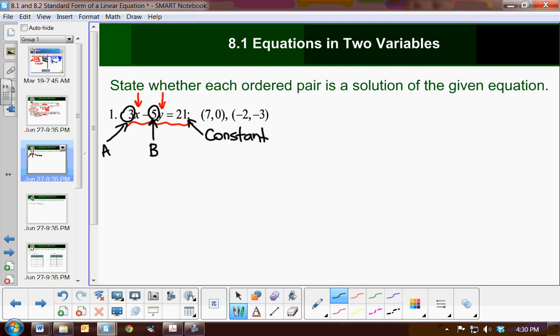Now the directions here say, state whether each ordered pair is a solution. So let's check out the first ordered pair, 7, 0. So the value of x will be 7, and the value of y will be 0. So we have 3 times x minus 5 times y is equal to 21. Now I have to verify whether this makes a true statement or not. And it does make a true statement. So therefore, 7, 0 is a solution.